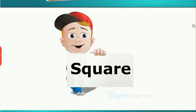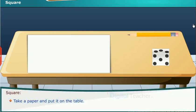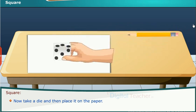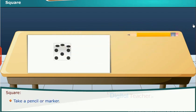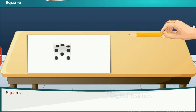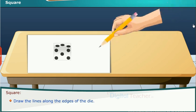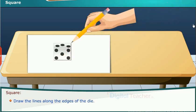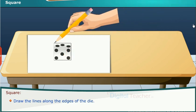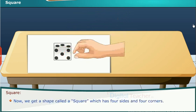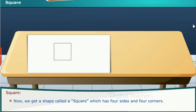Here we will know the shape of a square. Take a paper and put it on the table. Now take a die and then place it on the paper. Take a pencil or marker. Draw the lines along the edges of the die. Now we get a shape called a square, which has four sides and four corners.